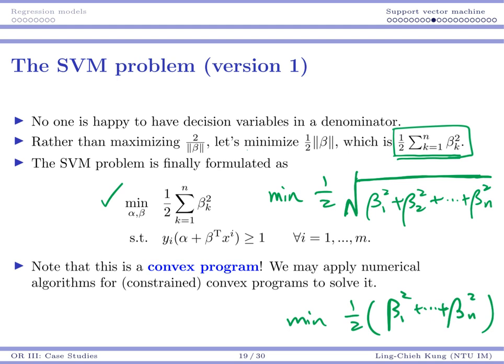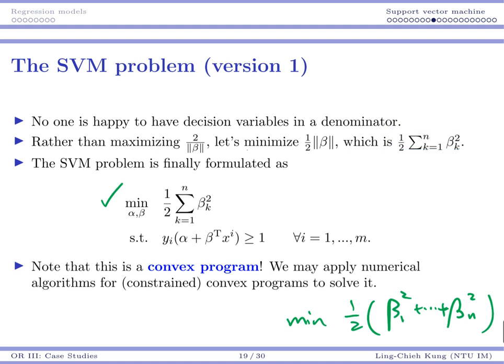So now we really get our final version of our SVM problem. If you want to find a good separating hyperplane, all you need to do is to solve this problem. Find beta, which exists in the formulation in the objective function, and use your alpha and beta to make sure that all the separation is correct.